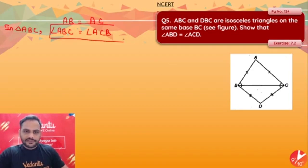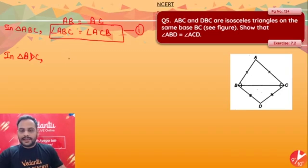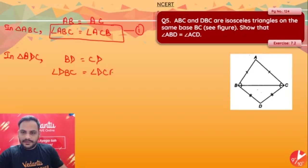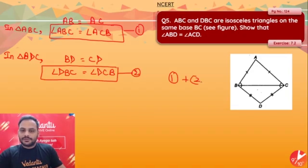Similarly, in triangle BDC, I can say that BD is equal to CD, so angle DBC is equal to angle DCB. Again, isosceles triangle property. Now add equation 1 and equation 2. If I add these two equations, I will get angle ABC plus angle DBC is equal to angle ACB plus angle DCB.